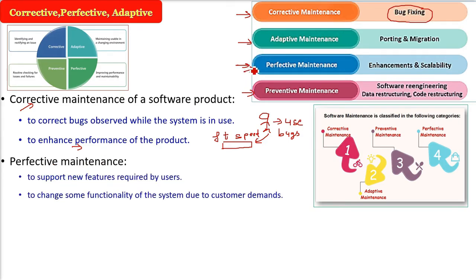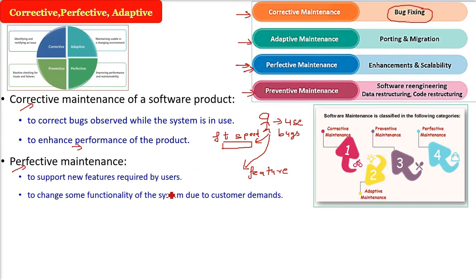Perfective maintenance is all about enhancements and scalability. The user is using the software and now says certain features are missing and he needs them. Perfective maintenance involves new feature addition required by the user, or changes to existing functionality — for example, moving something from the right to the left side. When your customer demands a change in functionality and you do that, it is called perfective maintenance. It is all about enhancement and scalability.